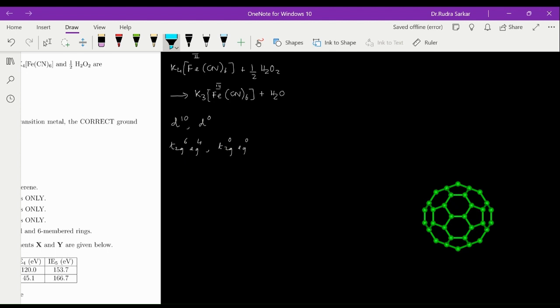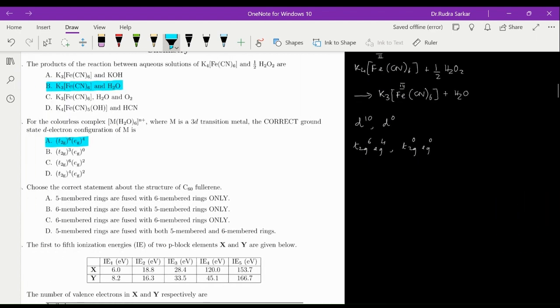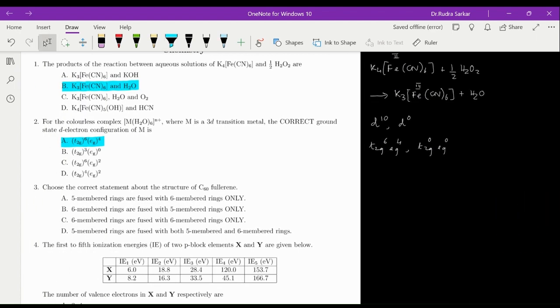So in total, we will have a pentagon fused with 5 hexagons. So the correct statement over here is going to be statement number A.